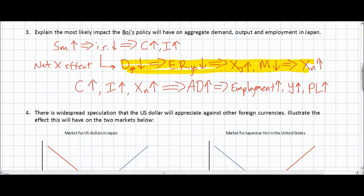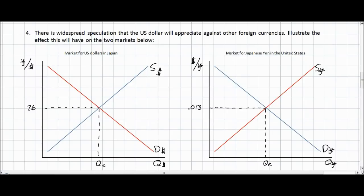We can see that lower interest rates stimulate both domestic consumption and investment, but also net exports through the effect on the Japanese yen. The next question has us consider the effect that widespread speculation that the US dollar will appreciate against other foreign currencies will have on both markets. First, let's define speculation: it is simply the expectation that the value of a certain asset will either increase or decrease in the future. The asset in question here is US dollars. If international investors expect the value of the US dollar will rise, they will wish to hold more US dollars now — including Japanese investors anticipating future appreciation.